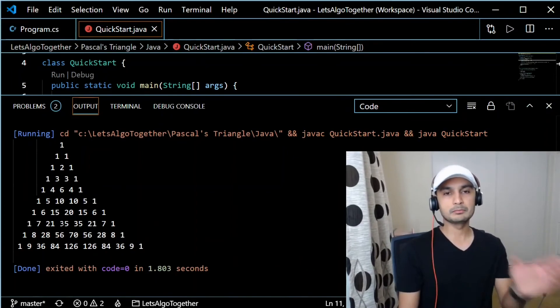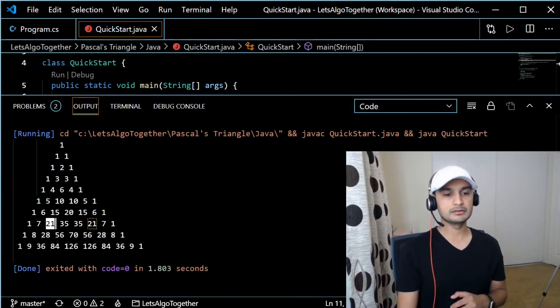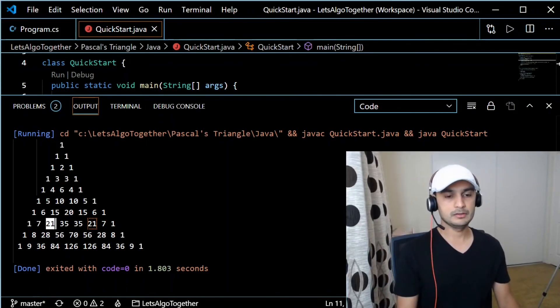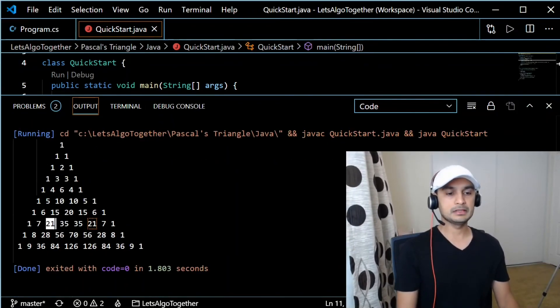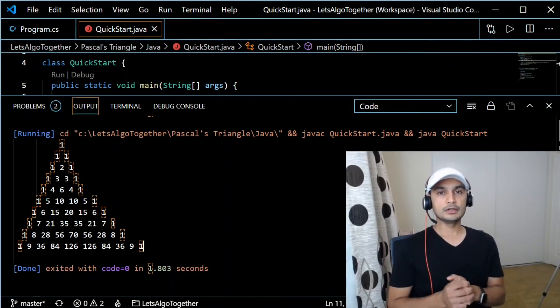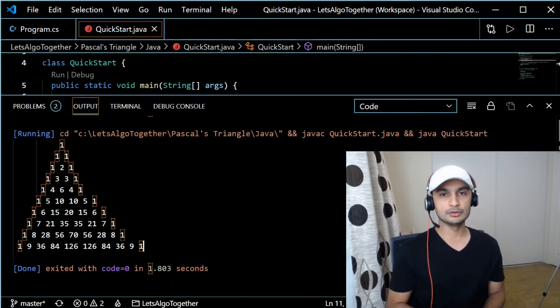So yeah, there you go. Obviously I didn't print it properly. Like once you have double digits, the spacing calculation just went heavy. So that's your Pascal's triangle.